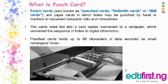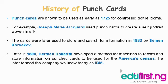History of punch cards. Punch cards are known to have been used as early as 1725 for controlling textile looms. Joseph Jacquard used punch cards to create a self-portrait woven in silk. The cards were later used to store and search for information in 1832 by Simon Kosakov. Later in 1890, Herman Hollerith developed a method for machines to record and store information on punch cards, and this was used for the American census. He later formed the company we know today as IBM, which stands for International Business Machines.